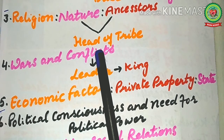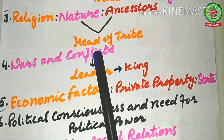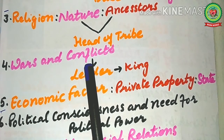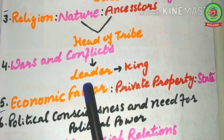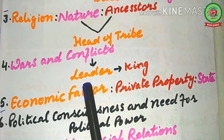The factor of force also played a part in the emergence of the state. The next point is wars and conflicts. Tribal wars of ancient times needed the unity of the tribe under its leader. Without a powerful leader it was difficult to win a tribal war. Either the tribal leader proclaimed himself to be the king of the tribe, or the tribe accepted him as a king.